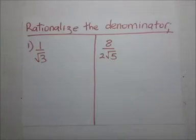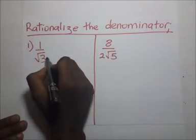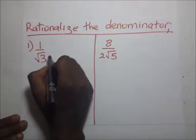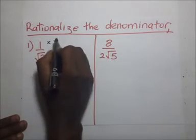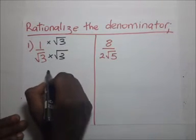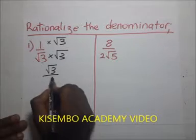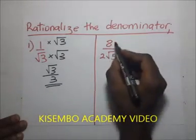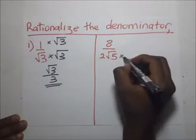So let's try rationalizing this denominator. Since it is a one-term expression in the denominator, we multiply it by that same term both in the numerator and denominator. So 1 times root 3 becomes root 3, divided by root 3 times root 3, which gives us 3. That is our answer.